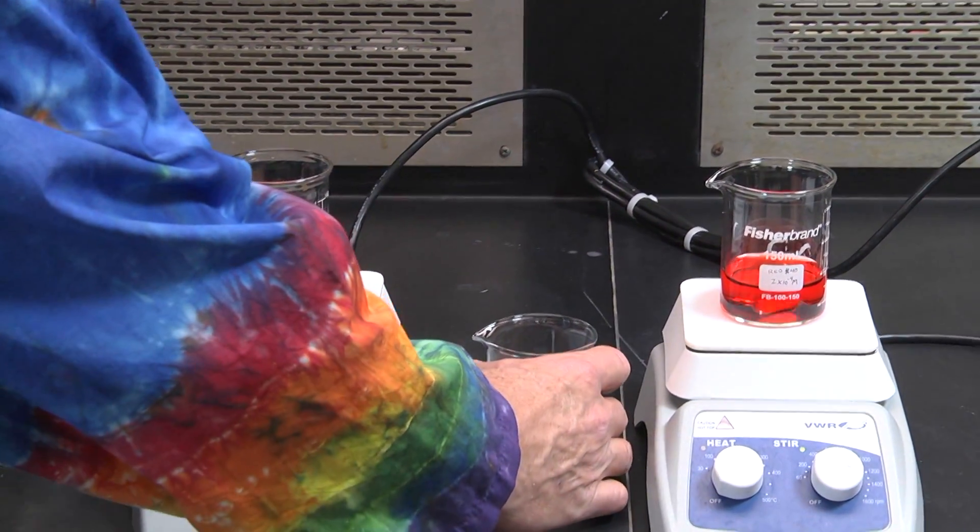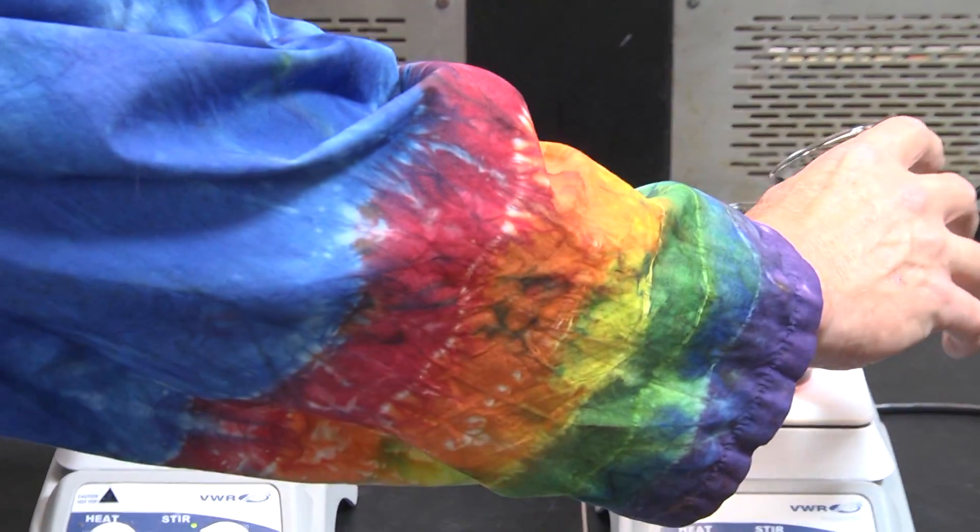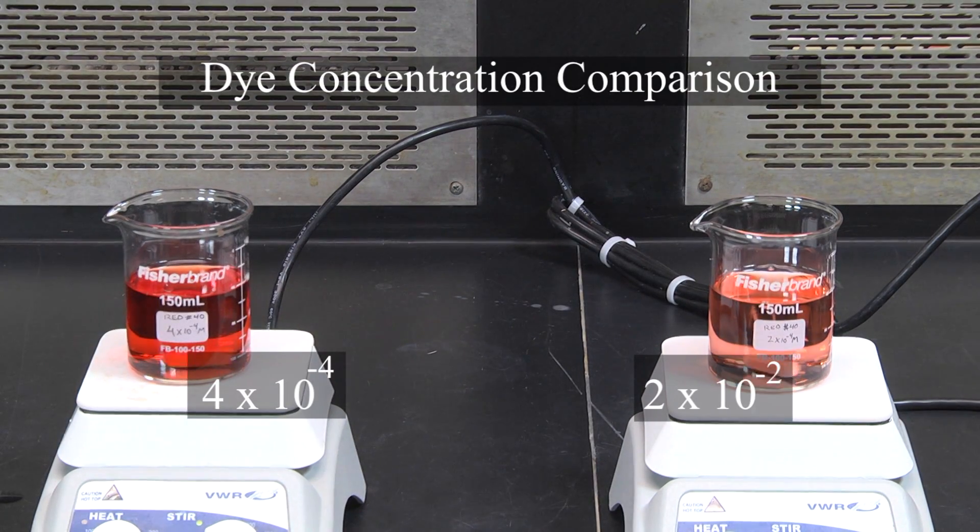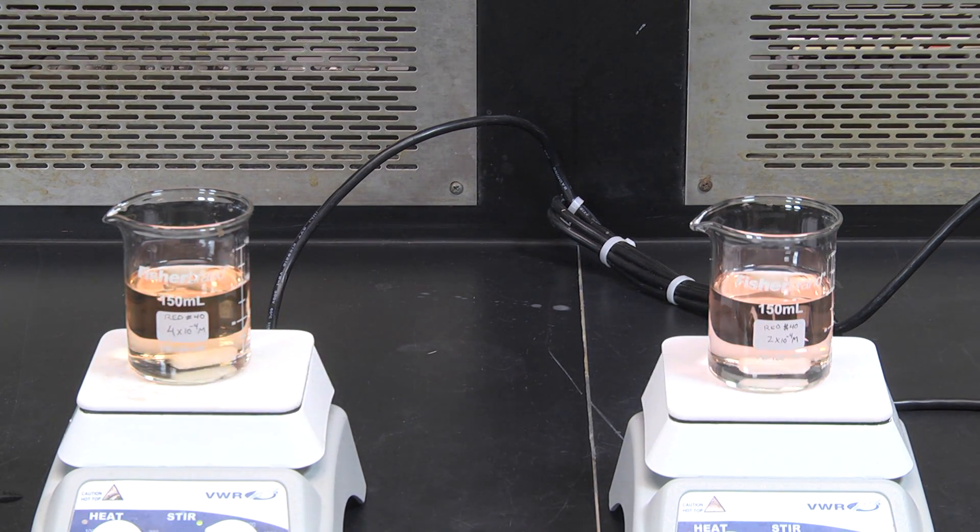Now let's try it again with the same bleach concentration but with different dye concentrations. In which beaker is the reaction going faster? Is this what you expect to see?